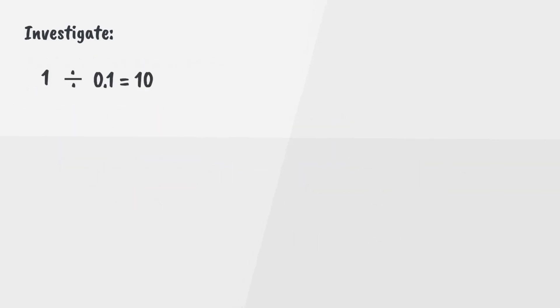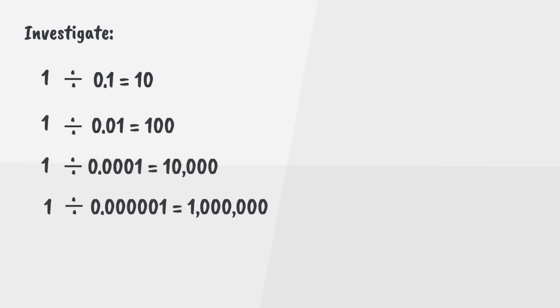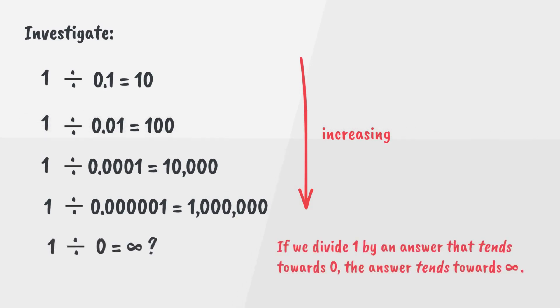If we divide 1 by 0.1, we get 10. By 0.01, we get 100, 10,000, and so on. These increasing values indicate that as we divide 1 by an answer that tends towards zero, the answer tends towards infinity.